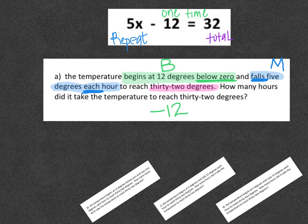Then when you keep reading, we said falls 5 degrees each hour. That means I'm going to multiply. But the word falls was really super important. And falls means it goes down. So that's also negative. And then our final part was equals 32.